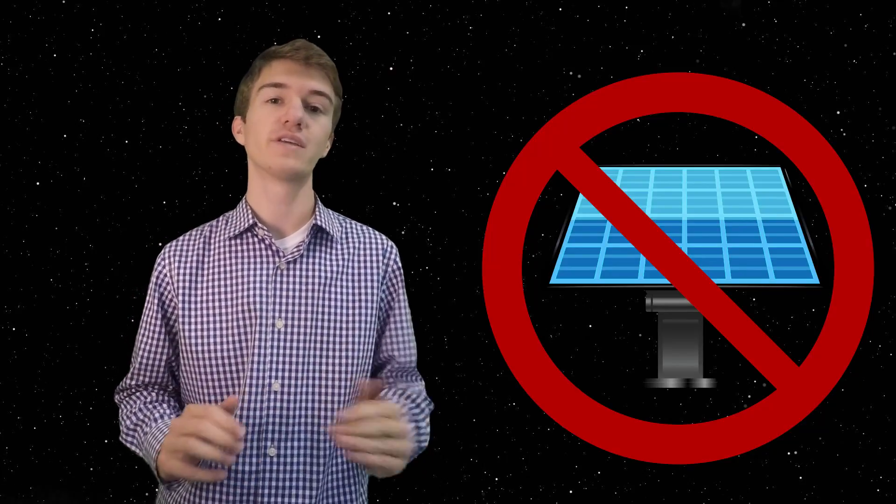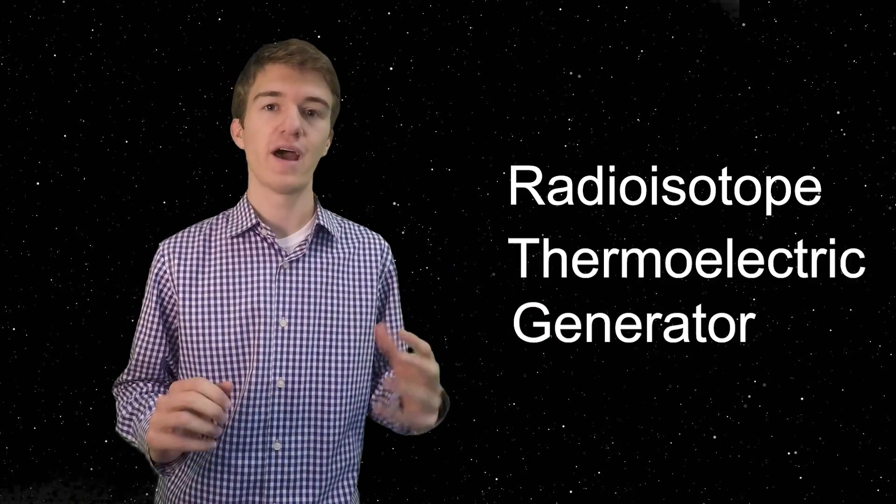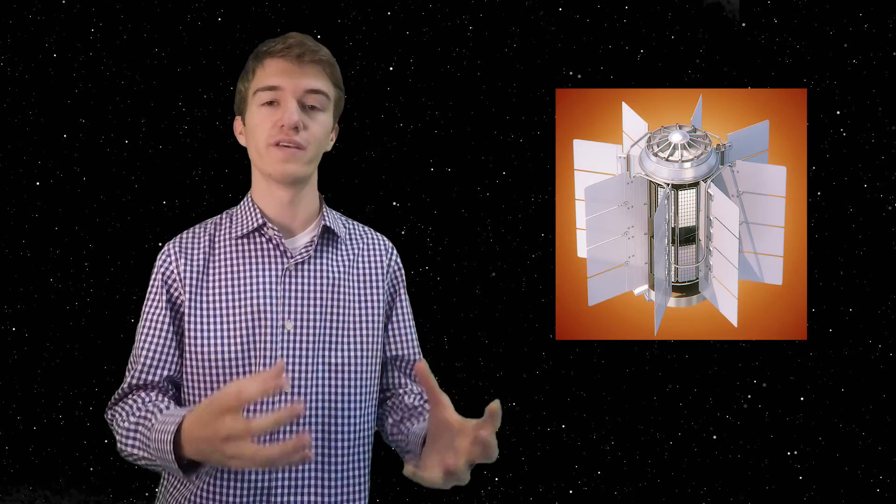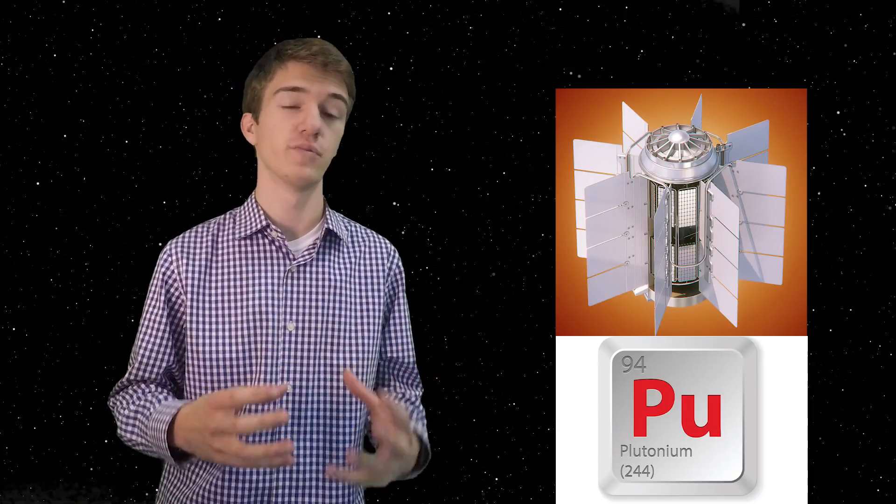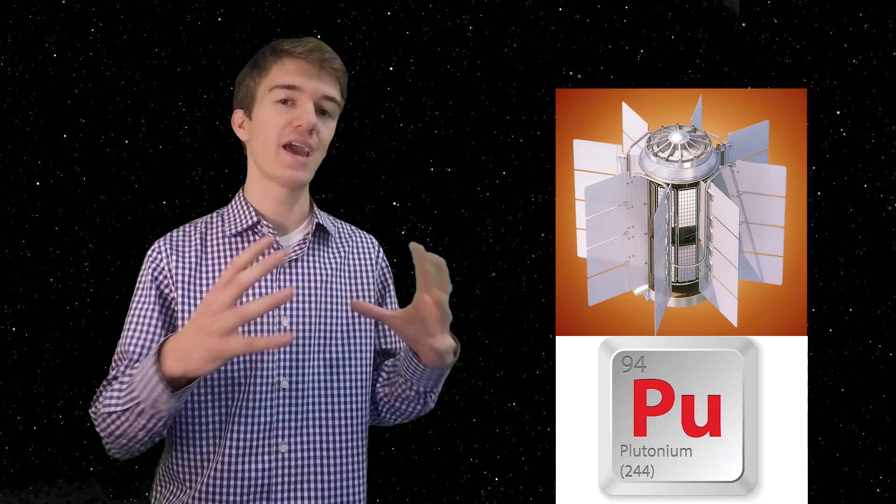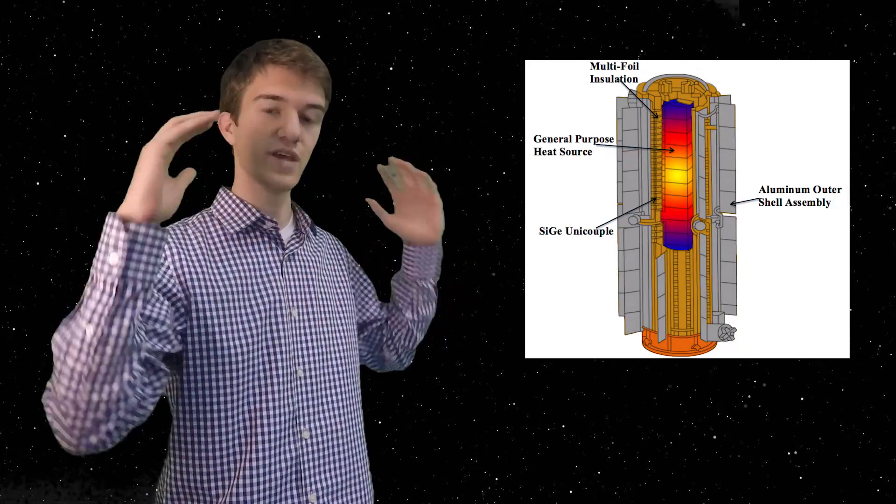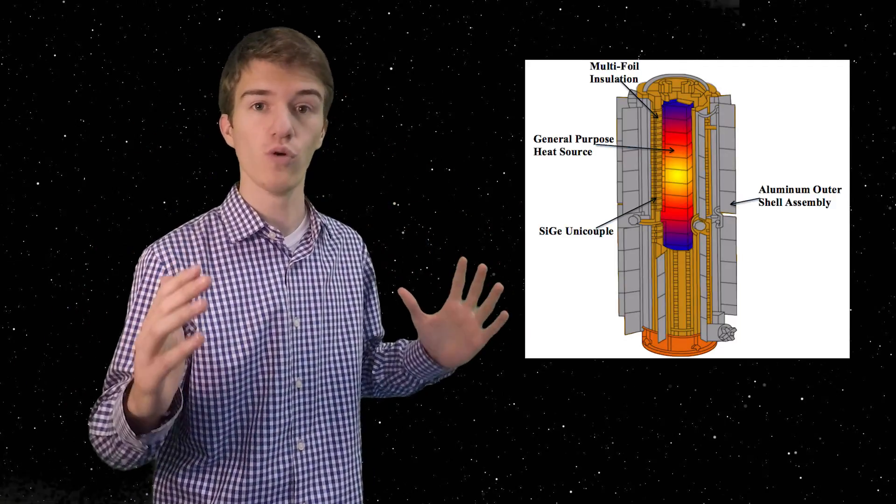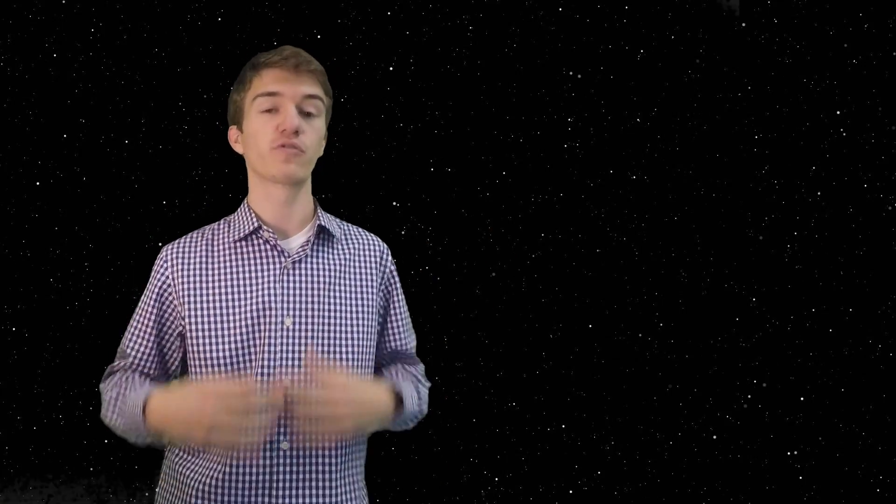Curiosity actually isn't powered by solar panels. It's powered by an RTG, or Radio Isotope Thermoelectric Generator. What that means is it has a radioactive core, in this case about 11 pounds of plutonium. As that decays, it releases a lot of energy and heat to the surrounding thermocouples. The change in temperature from the inside that's really hot to the outside Martian air, which is pretty cool, causes a voltage which creates energy that Curiosity can run on.